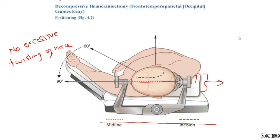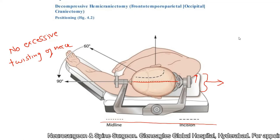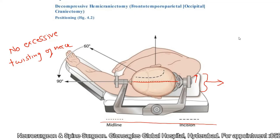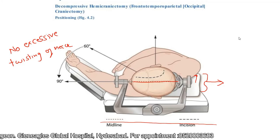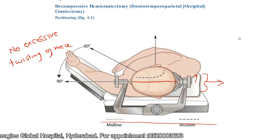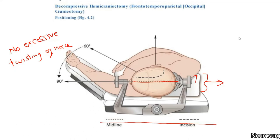This is important for obvious reasons. If the patient has cervical spondylosis or canal stenosis, excessive twisting can cause neurological deficit. More than that, compression on the jugular vein will cause excessive bleeding during surgery. So you must ensure there is no excessive twisting of the neck.